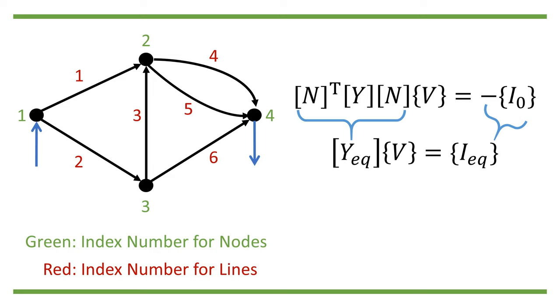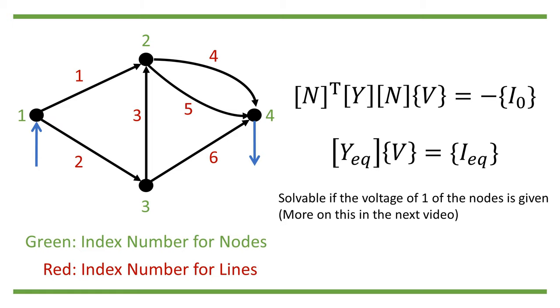This is a linear system of equations of V, and we should be able to solve it if we are given sufficient information. For example, if the voltage of one of the nodes is known. Intuitively, this means that we can only calculate the relative voltage difference of each node, but not the actual voltage value, since the reference voltage can be arbitrarily chosen as long as the relative voltage differences among the nodes remain the same.